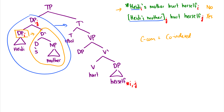In the next video, we'll talk about the binding principles A, B, and C, and the different conditions for these sentences to be grammatical or ungrammatical. If you have any questions, please leave them in the comments below and I'll answer them the best that I can.